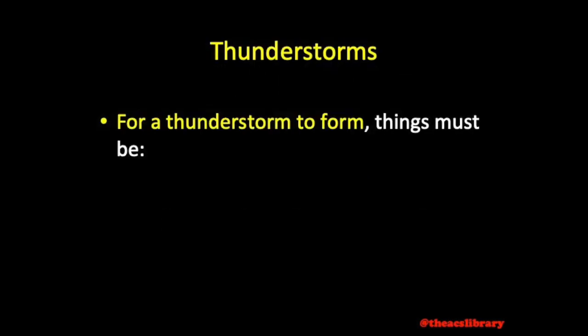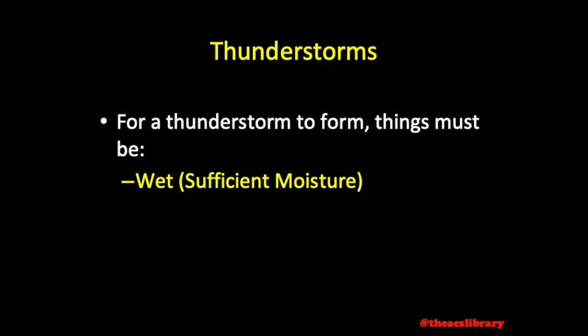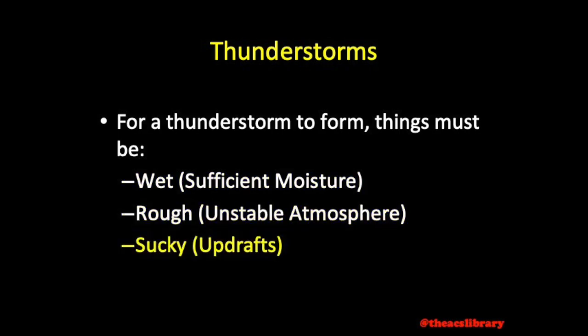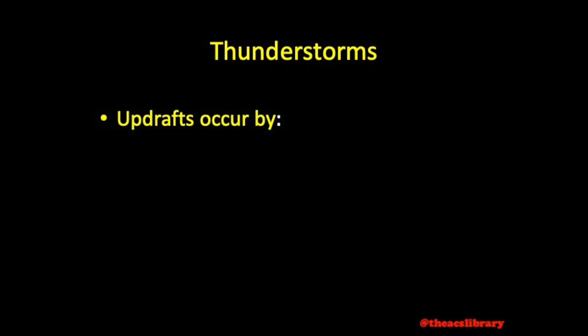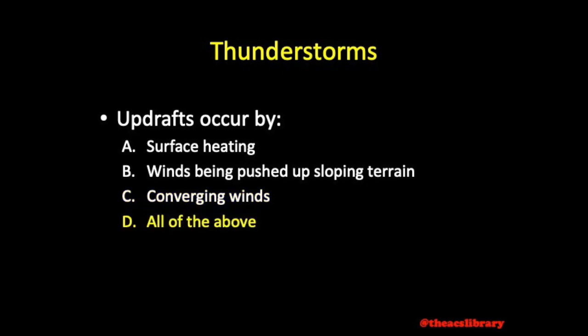In order for a thunderstorm to form, there must be some pre-existing conditions. Things must be wet, rough, and sucky — meaning the atmosphere must have sufficient moisture, must be unstable, and the unstable air must then experience an initial upward lifting moment, otherwise known as an updraft, to set things in motion. These updrafts are often provided by surface heating, winds being pushed up sloping terrain, converging winds, or any combination of these.